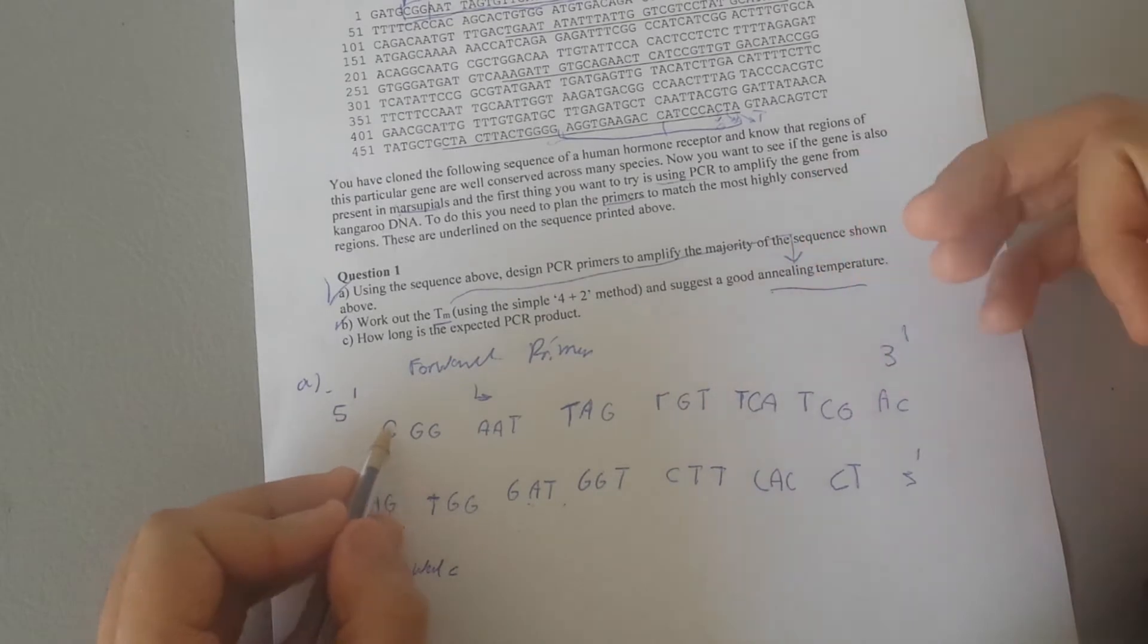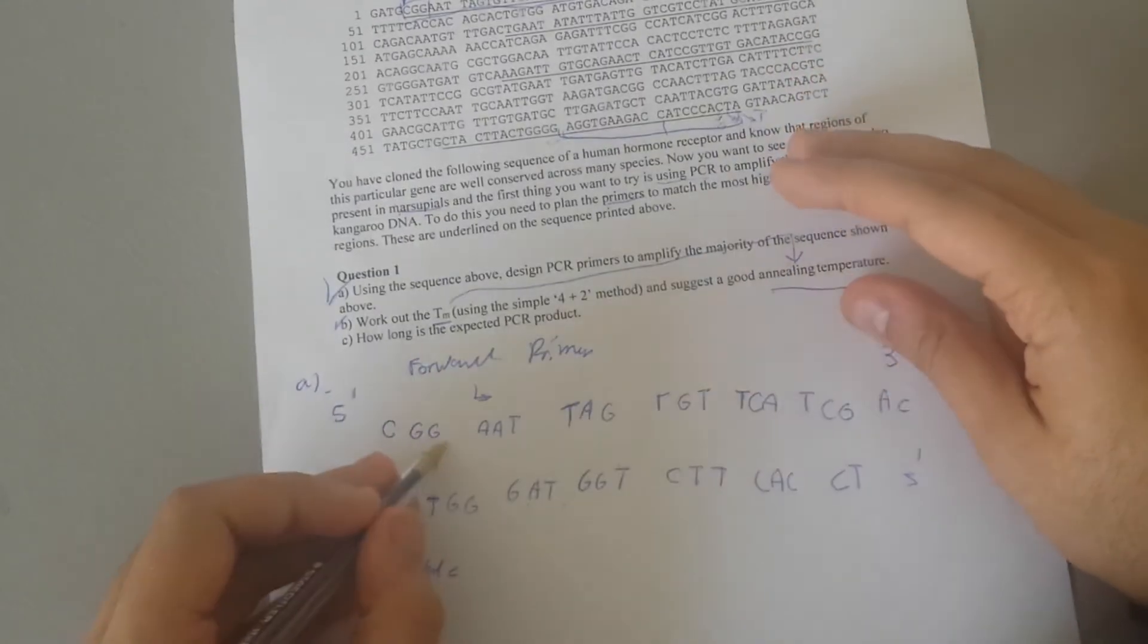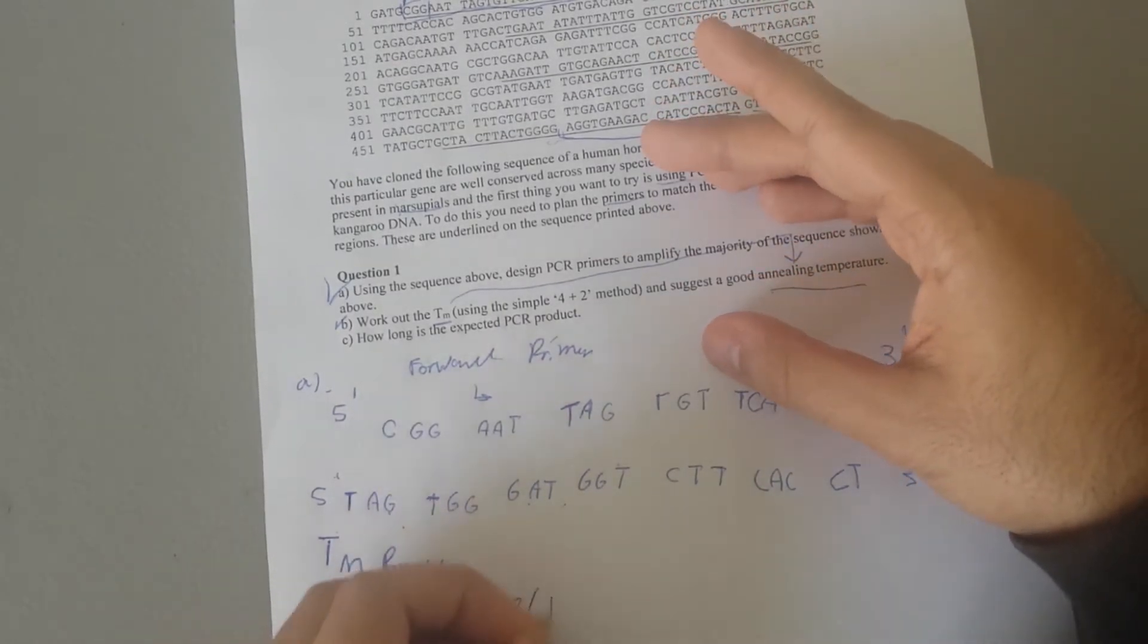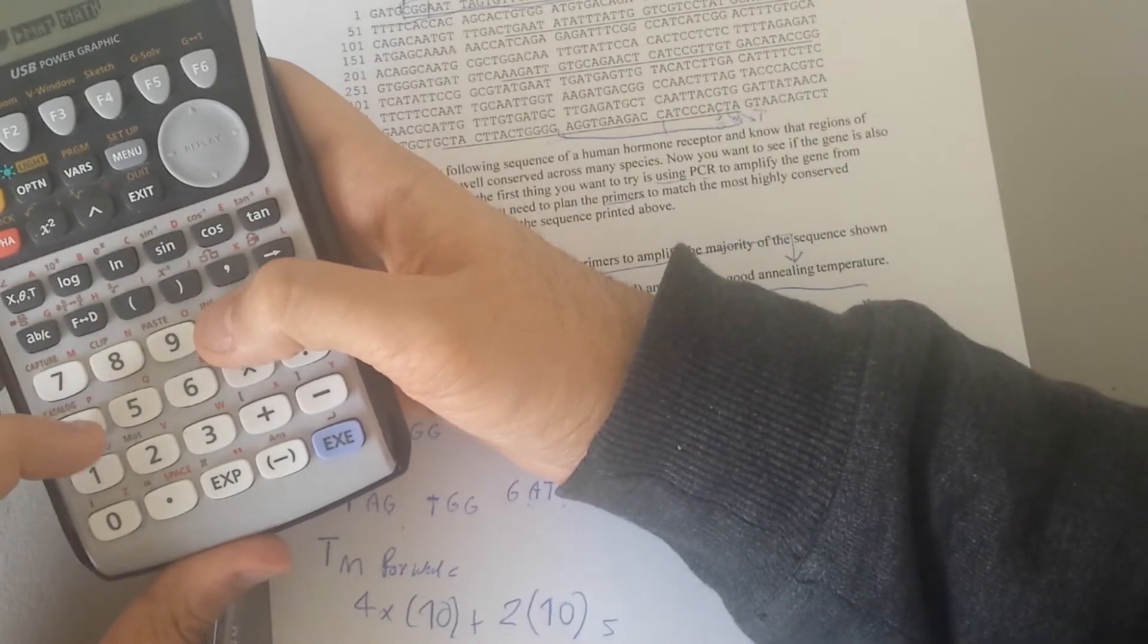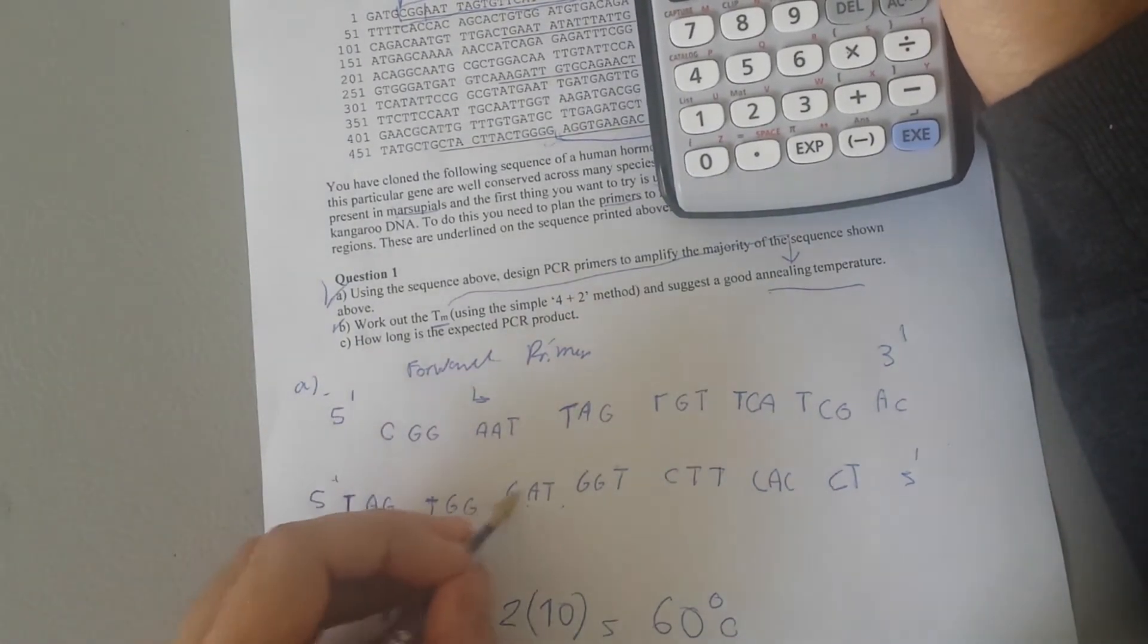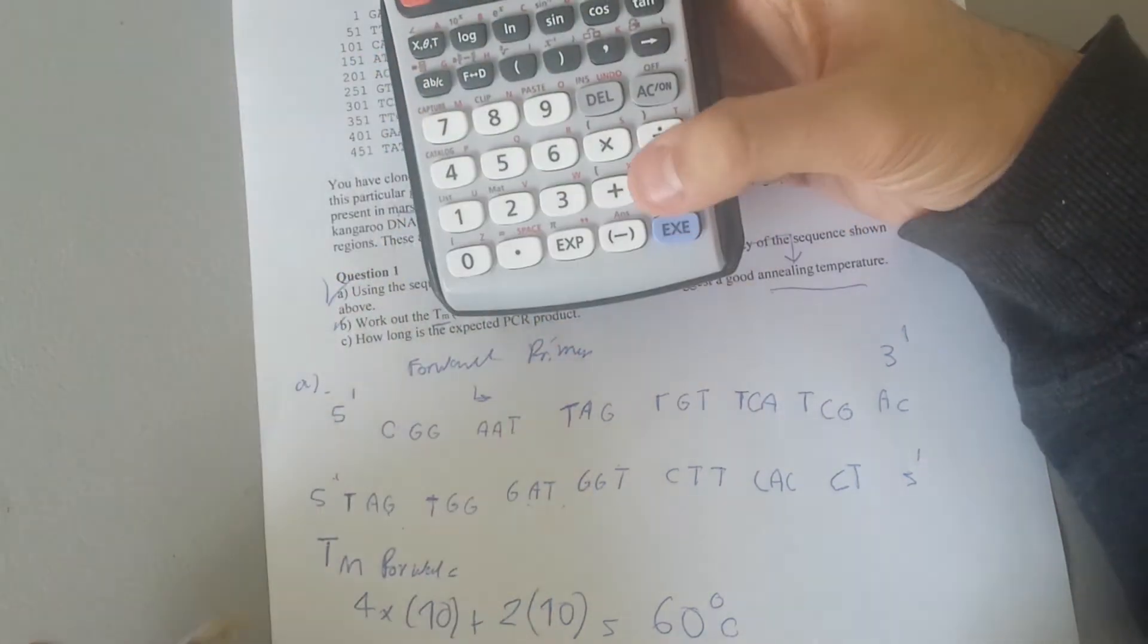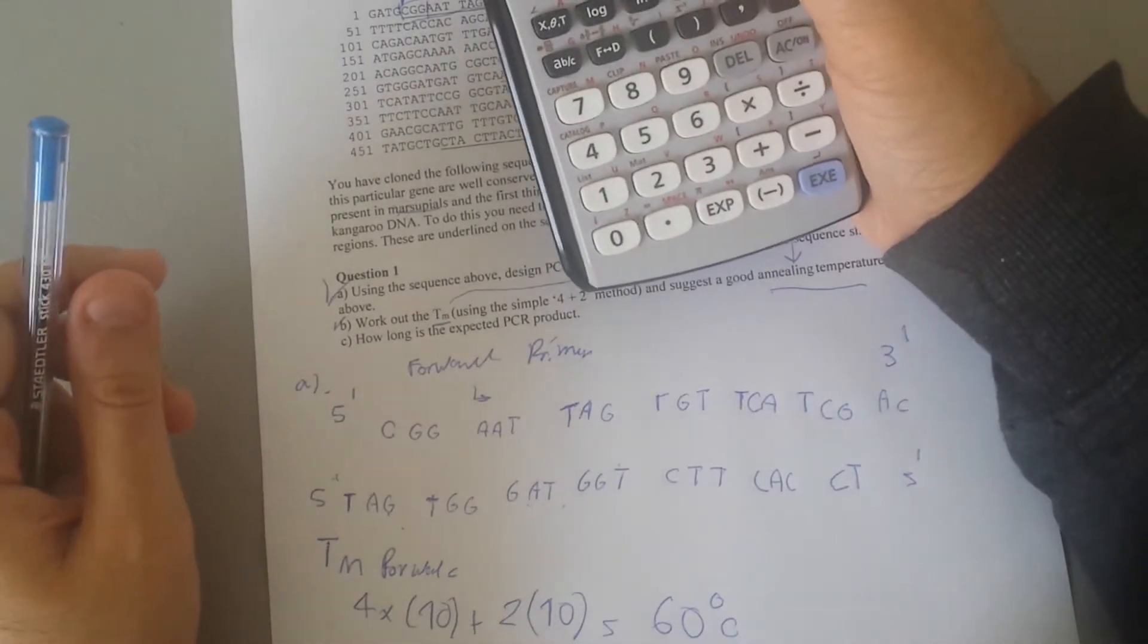What is the number of CG we have? One, two, three, four, five, six, seven, eight, nine, and ten. We have ten CG. If we have ten CG it means we have ten TA as well. So it means four times ten plus two times ten, that's sixty degrees Celsius. Then for the reverse, we have eleven, so forty-four plus two times nine, so here's sixty-two.